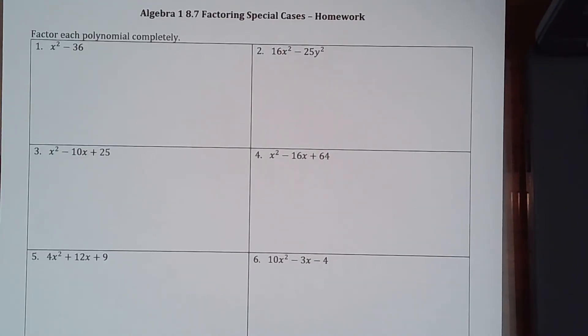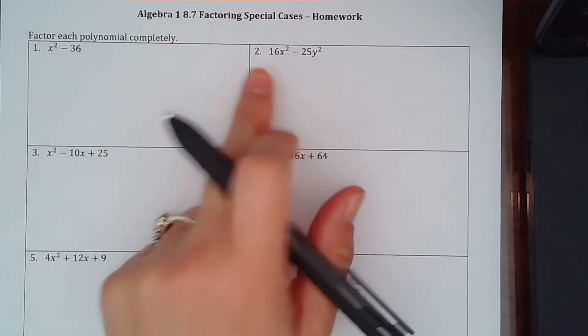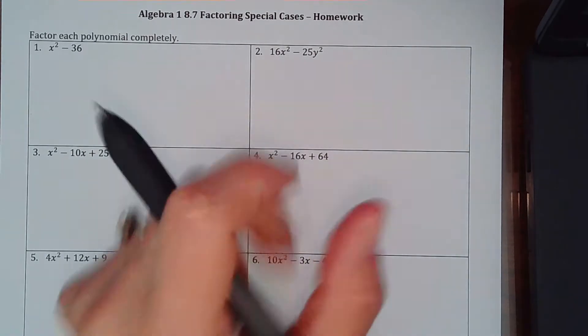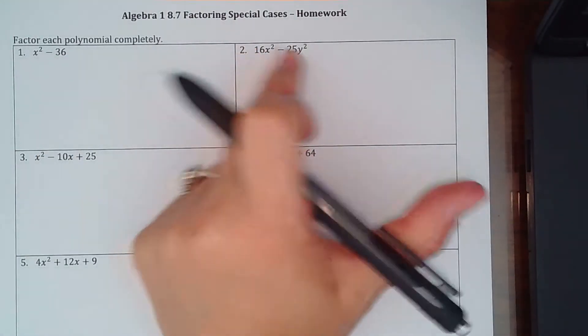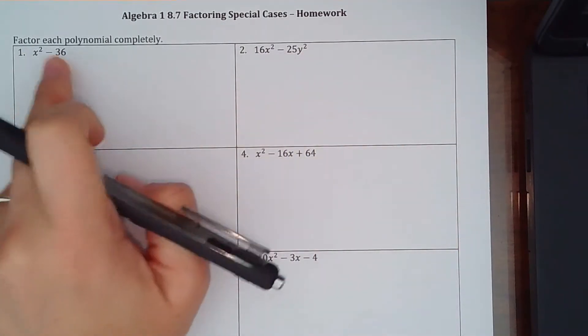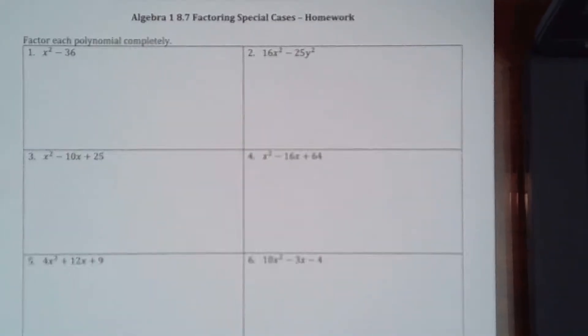Hey guys, so first thing we're going to look at is straight off the bat, we should be able to tell these are the difference of two squares, because the first and second terms are both perfect squares, and they're separated by a subtraction sign.